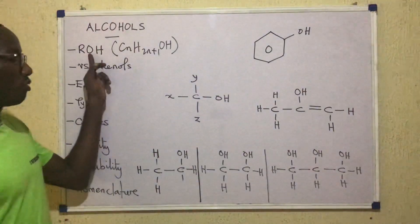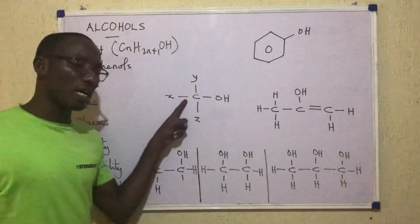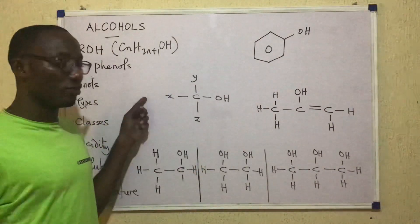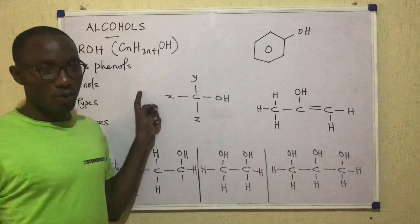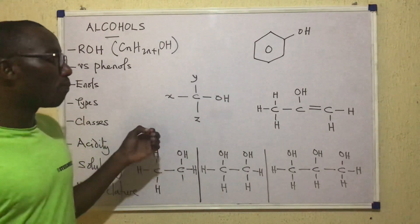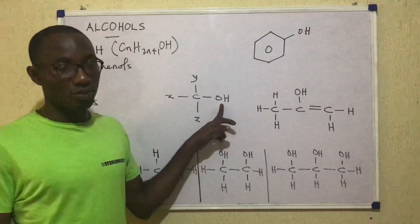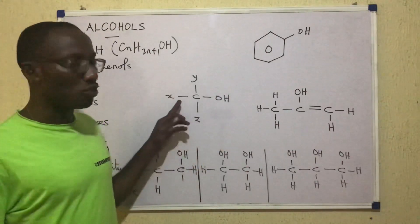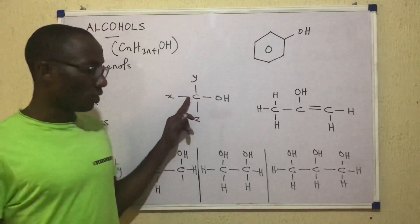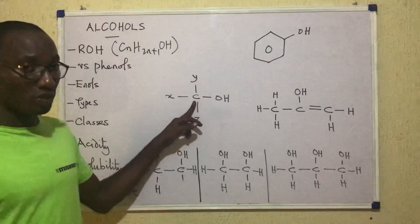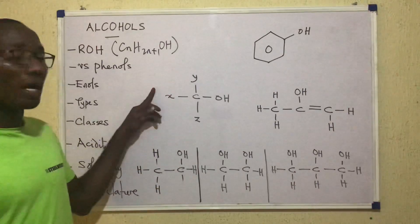This can be represented in structure as follows and from here we can get a definition for alcohols. We call an alcohol a compound in which an OH group, hydroxyl group, is attached to a saturated carbon atom. So this carbon atom is described as saturated and that makes this compound an alcohol.